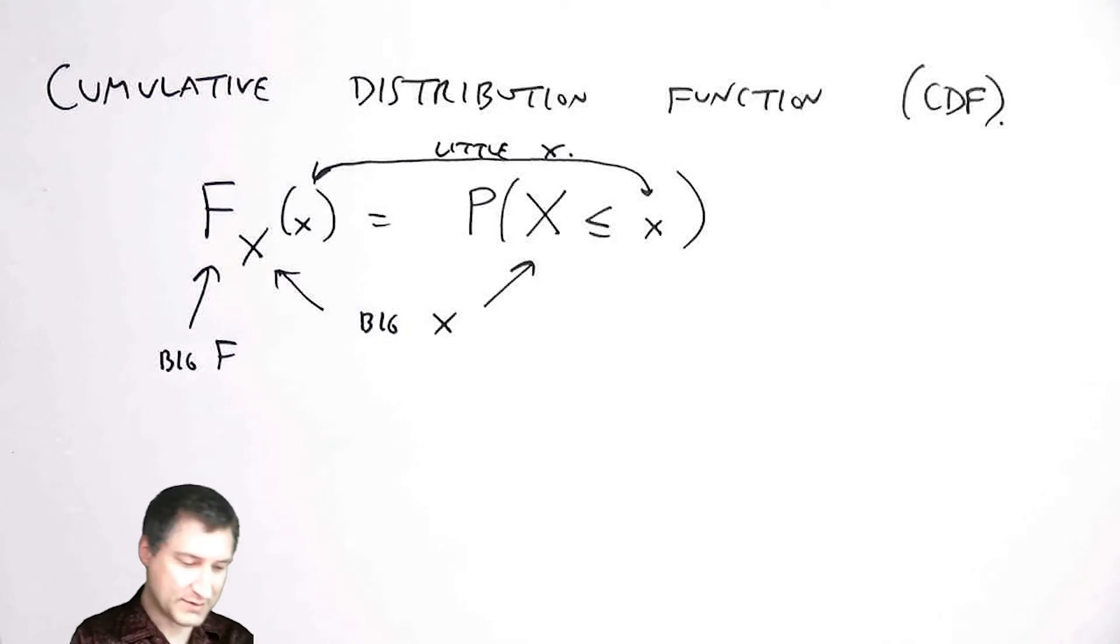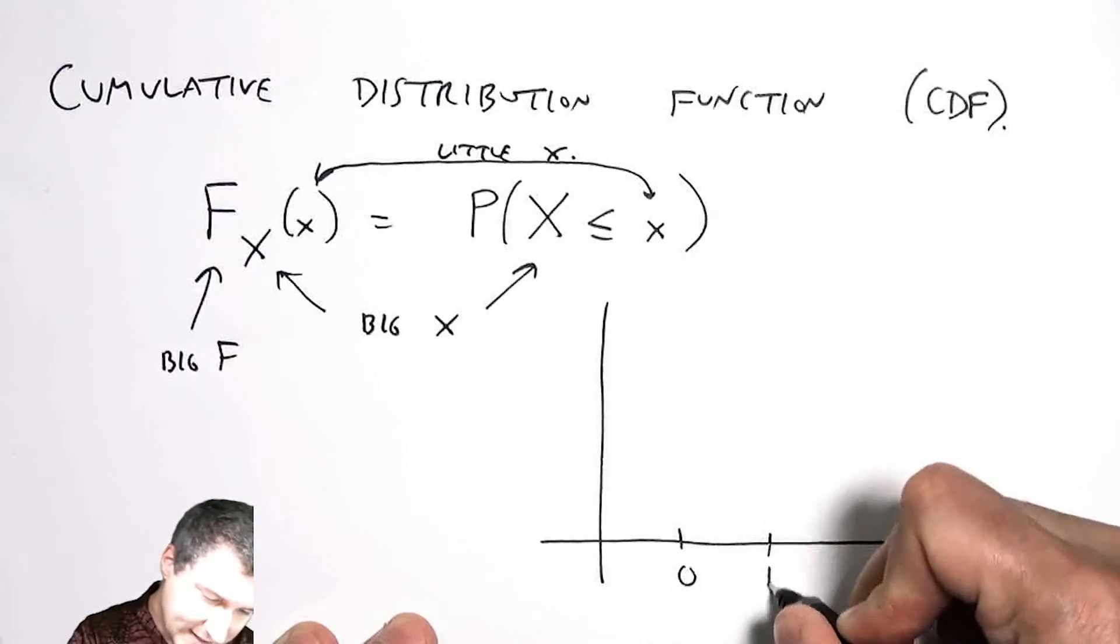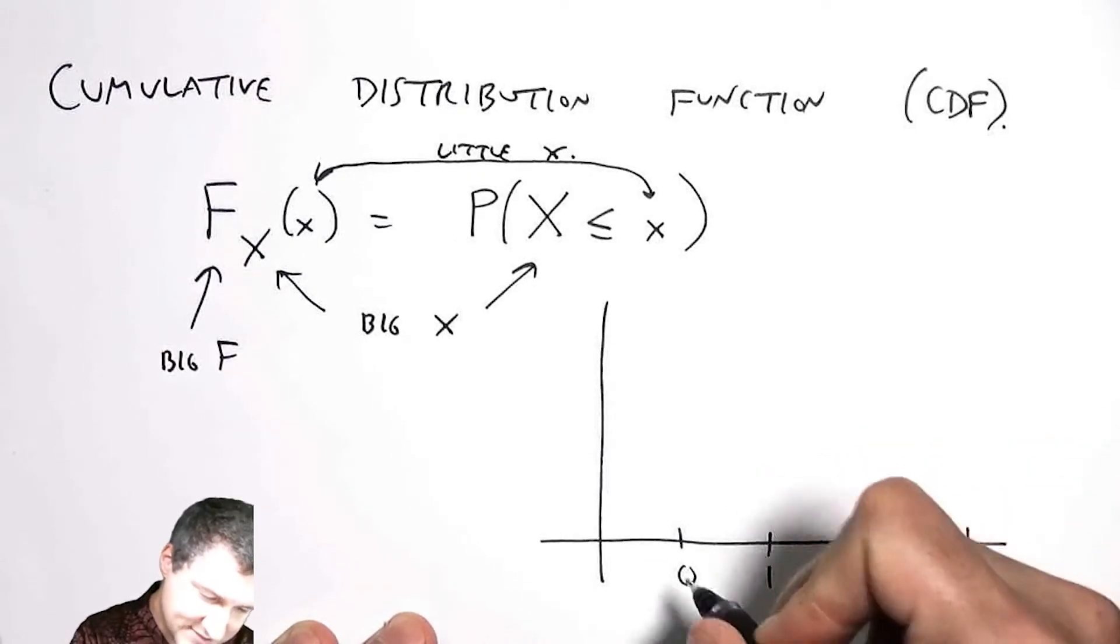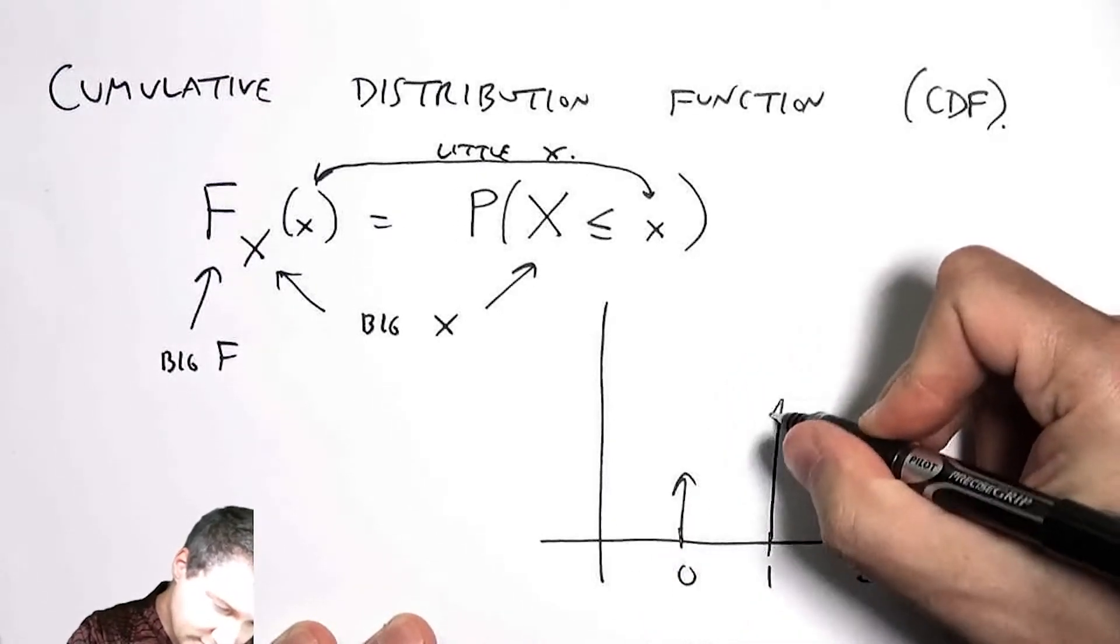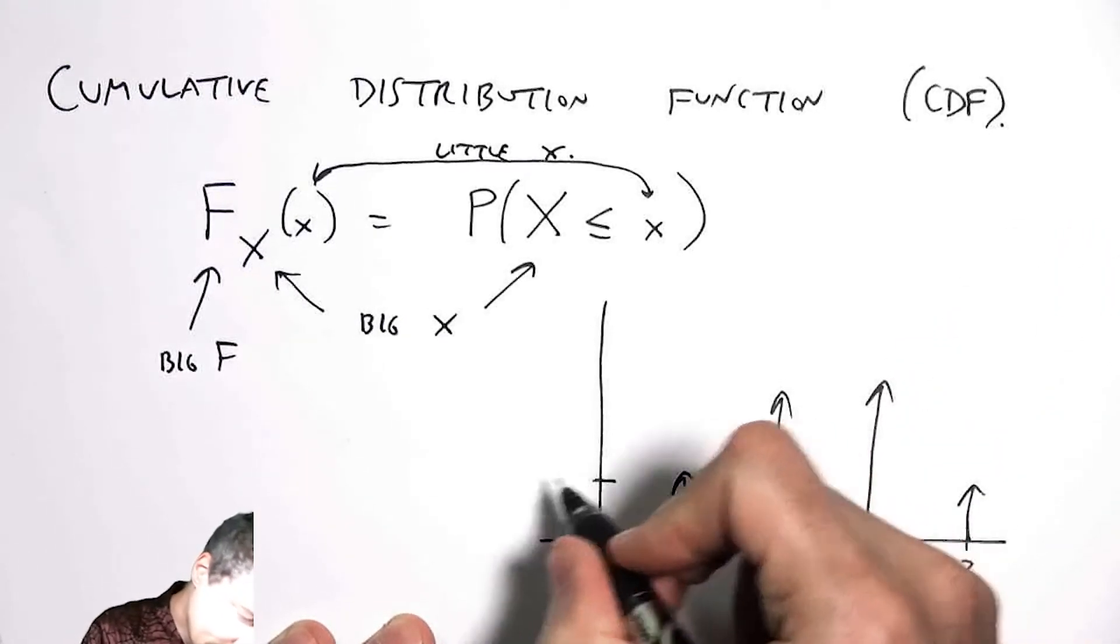So to make this a little more concrete, let's think about the binomial random variable. Suppose I flip a coin three times and I count the number of heads and it's a fair coin. So this would be my PMF.